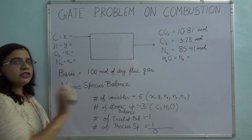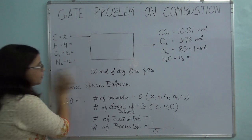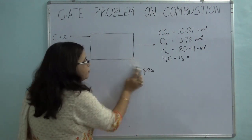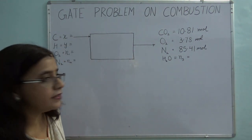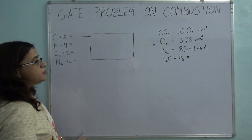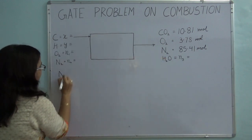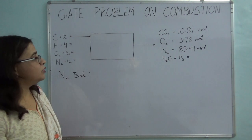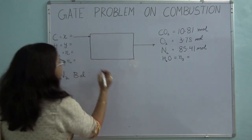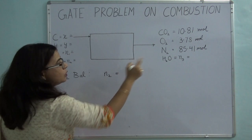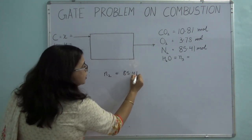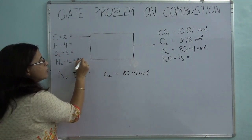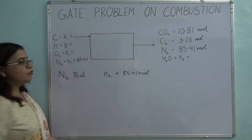Following the methodology, we first take the inert species balance, which is the nitrogen balance. It takes the form: in equals out. So N2 equals 85.41 moles. I will update the flow chart with this value.